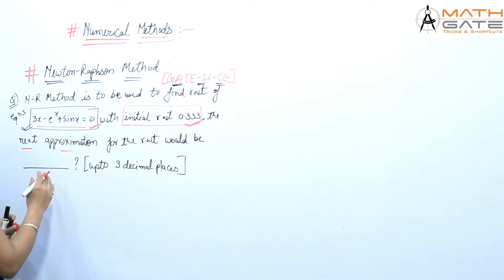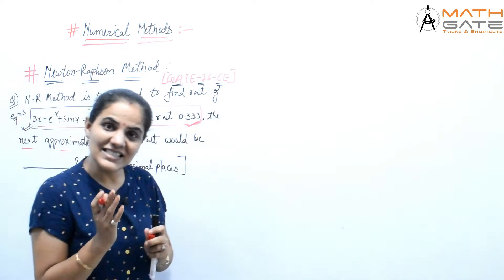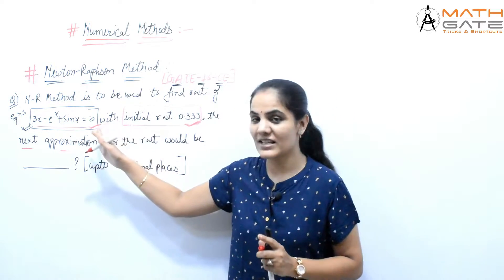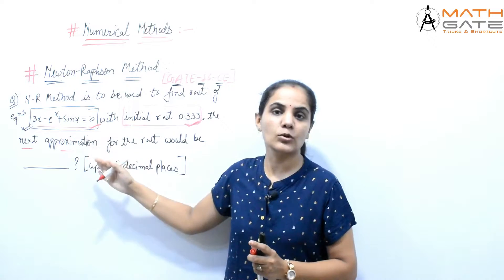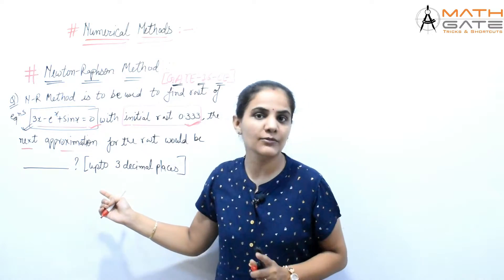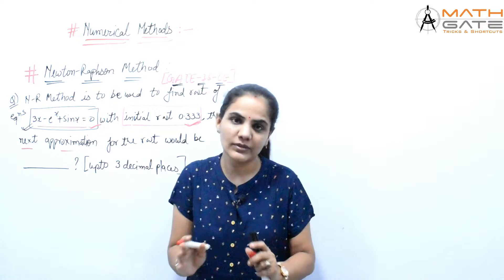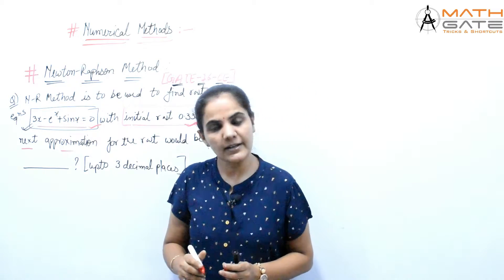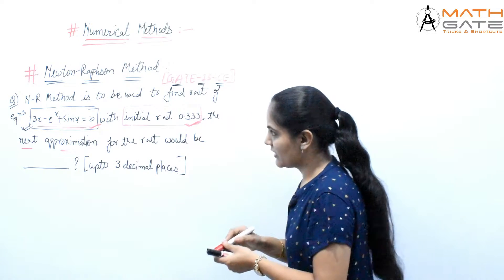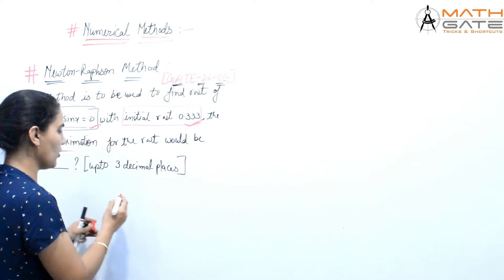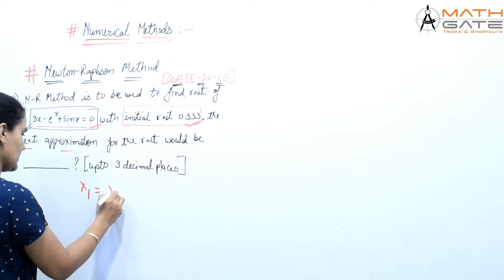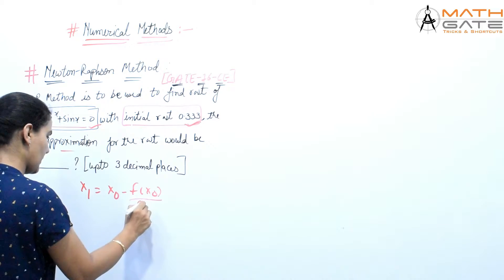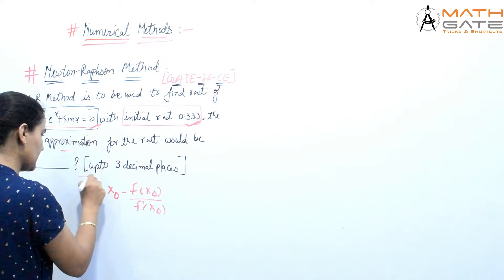x0, the initial root, is given. The function f(x) is given, and we need to find the next root x1, up to three decimal places, using Newton-Raphson method. The formula for Newton-Raphson is: x1 = x0 minus f(x0) divided by f'(x0).